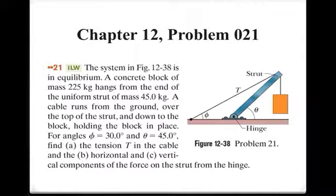In this problem, we're given a system as shown in the figure, and we are told that there is a concrete block with a given mass hanging off the end of a uniform strut, which also has a given mass. A cable runs from the ground, over the top of the strut, and down to the block, holding the block in place.